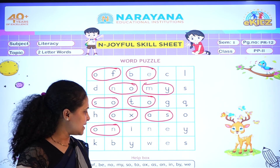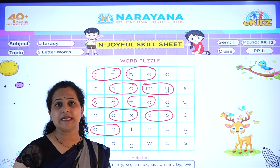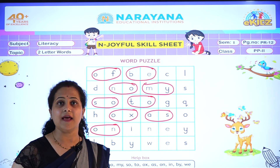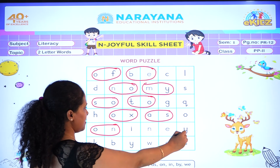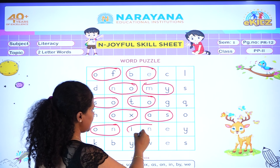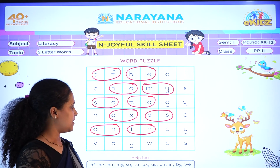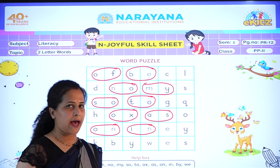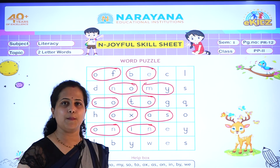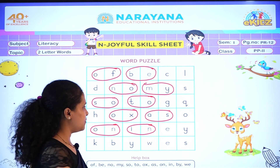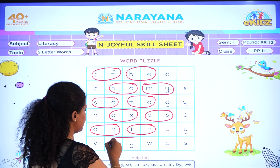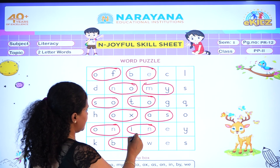Now let's see. Next word is 'in'. I-N, in. Where is 'in'? Here is 'in'. Let's circle it. Now we have 'by' and 'we'. B-Y, by. Where is 'by'? Here is 'by'. Circle it.